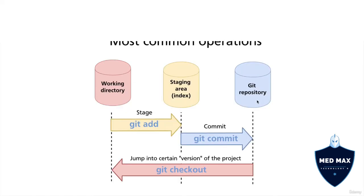To move files from the working directory to the staging area, you use the command git add. This command requires arguments. If you specify a dot as the argument — git add . — it will add all changed or untracked files into the staging area or index. However, this command will not put files into the git repository.